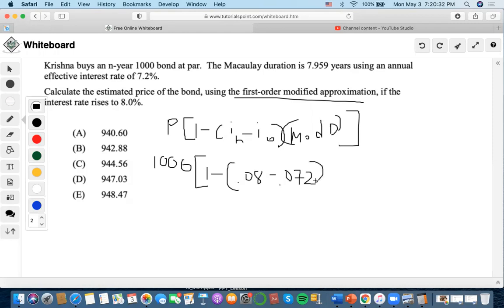Now what else they said? Macaulay. Okay, they didn't give us modified duration, but they gave us Macaulay duration. So what is the rule to convert Macaulay to mod? We're going to have to divide this by the effective interest rate, basically divided by V. So it would be divided by 1.072, 7.959 divided by 1.072.